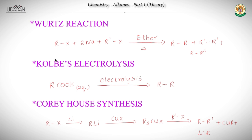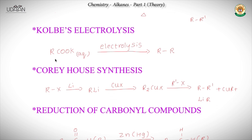The next is Kolbe's electrolysis. In Kolbe's electrolysis, we start with the potassium salt of a carboxylic acid. When this is electrolyzed, you get an alkane. Remember, here we get only symmetrical alkanes. So if you take RCOOK and R'COOK together, you may get R-R, R'-R', or R-R' - but if you want only symmetrical alkanes, we take just one salt.